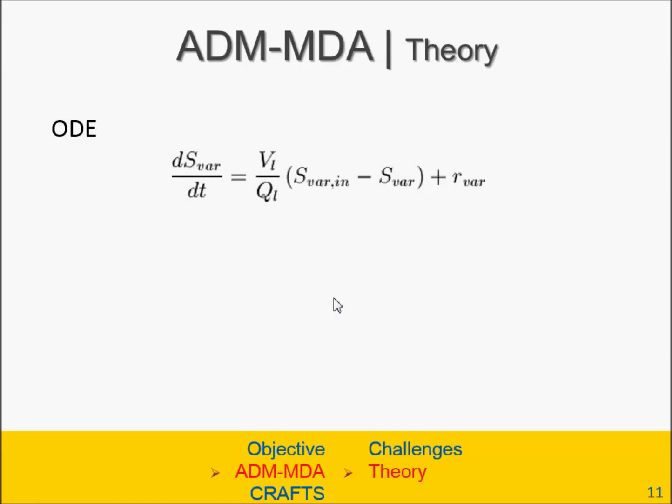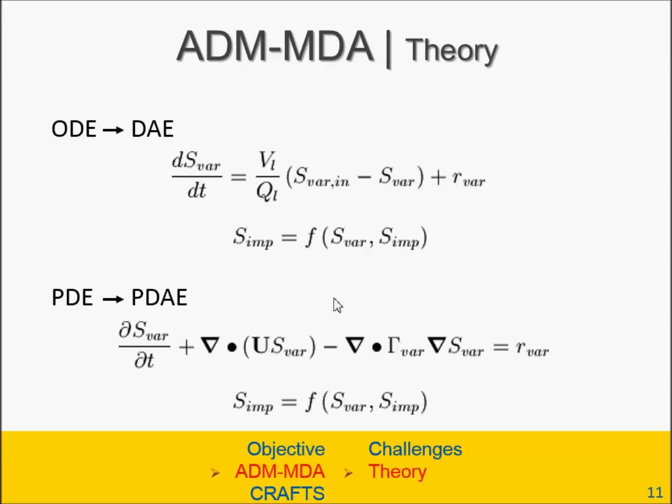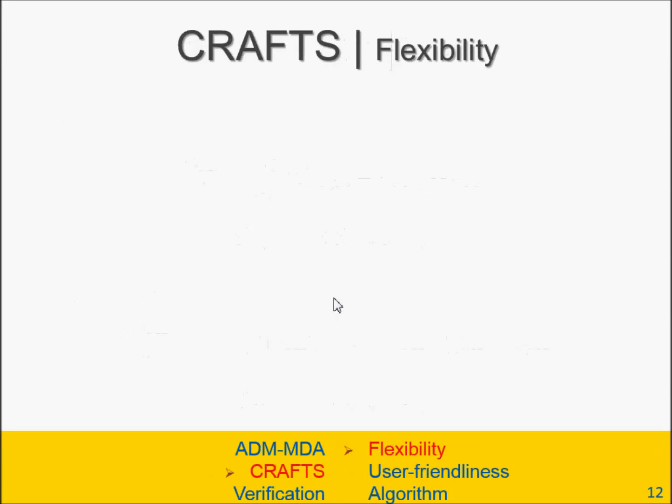So looking at this, the statement of conservation of mass for a species in ADM1 is a simple set of ordinary differential equations. Bringing this into three dimensions makes it a partial differential equation. Now, the ODE set for ADM1 is too stiff to solve, so they introduce implicit relations to make it practical. And when that happens, it becomes a differential algebraic equation set, something that is actually very common and can be used by many conventional tools such as MATLAB. However, when this happens in three dimensions, it becomes a partial differential algebraic equation set, something that is very uncommon. And at the time I started my research, no tools were publicly available. So I had to create my own solver algorithm. And what it was, was CRAFTS.